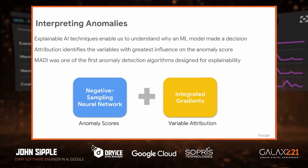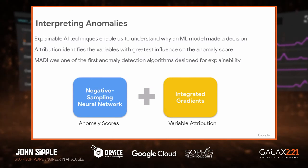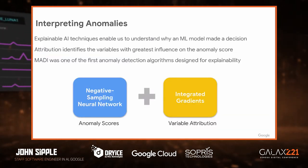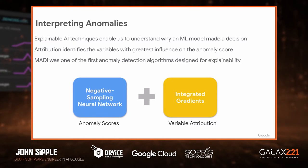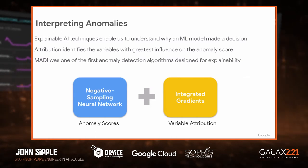Until recently — really 2020 — anomaly detection with explainable AI were never really brought together. MADI, our implementation — multivariate anomaly detection with interpretability — was one of the very first anomaly detection algorithms designed from the ground up with explainability in mind. Our solution applies a combination of a negative sampling neural network to detect anomalies combined with integrated gradients to do variable attribution, identifying those features that had the greatest influence on the anomaly score. That variable attribution we often refer to as blame.